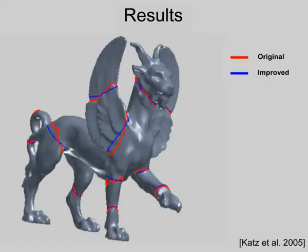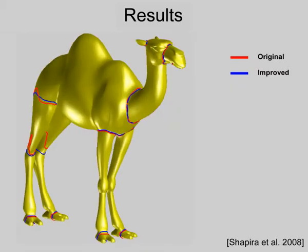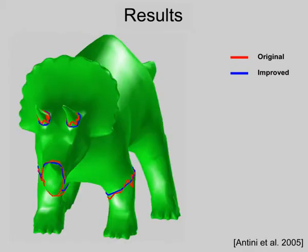In the paper, we have shown improvements of several results produced by some of the state-of-the-art segmentation algorithms. Some of these algorithms include a post-processing stage for improving the segmentation, and yet we have managed to improve upon them further. Determining the exact boundaries is vital for certain applications, such as animation, modeling, and skeleton extraction.